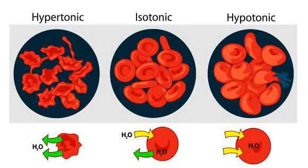One of my students asked me to describe the process of cytolysis in detail. Cytolysis is also known as osmotic lysis. It occurs when a cell bursts due to an osmotic imbalance that has caused excess water to move into the cell.